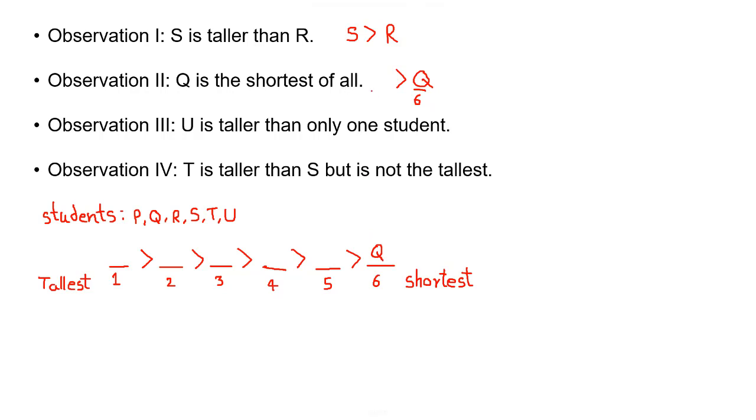U is taller than only one student. U is taller than only one student means that student will be Q because from observation 2 it is the shortest. So U will be number 5.